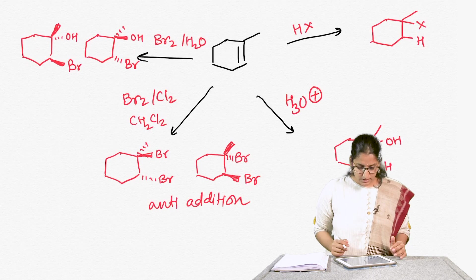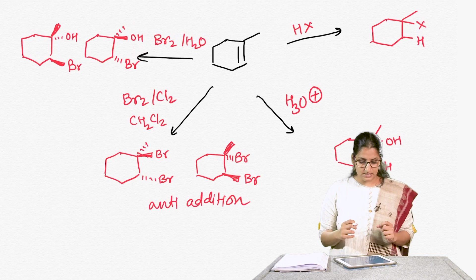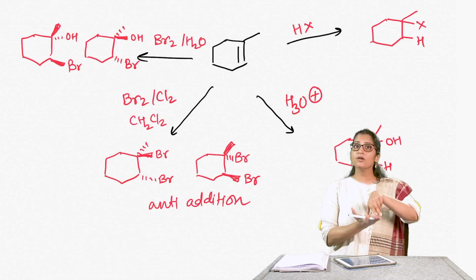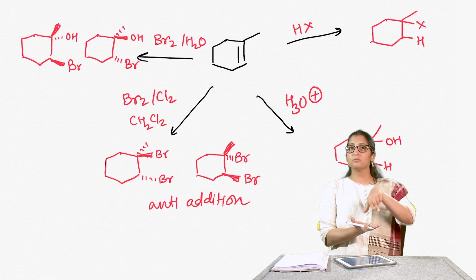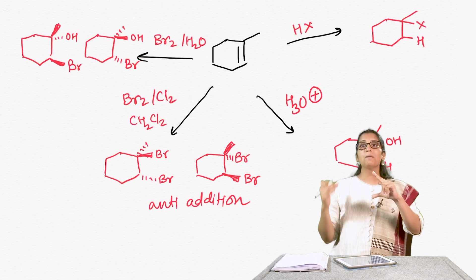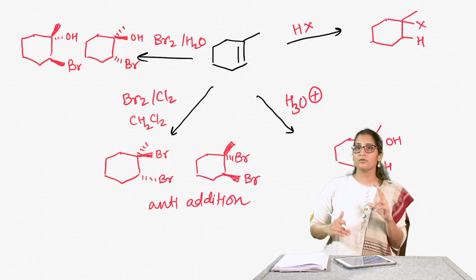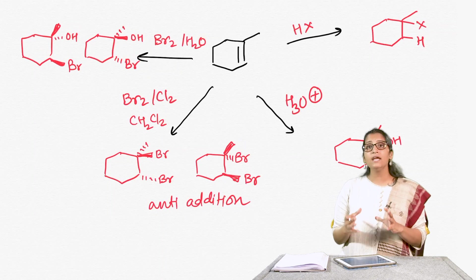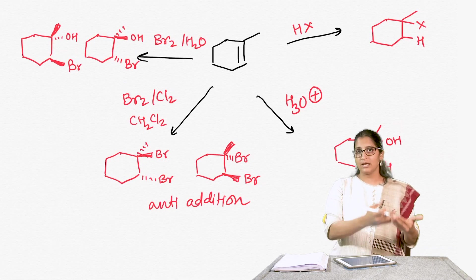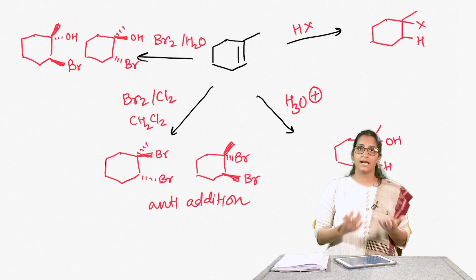In all of these reactions, the way the mechanism takes place really determines how the product is formed. In bromination, for example, you had a triangular intermediate forming — the bromonium ion. Anytime you have a triangular intermediate, you see backside attack by the counter ion, so the other bromide attacked from the backside. Whenever you have a triangular intermediate you get anti-addition.